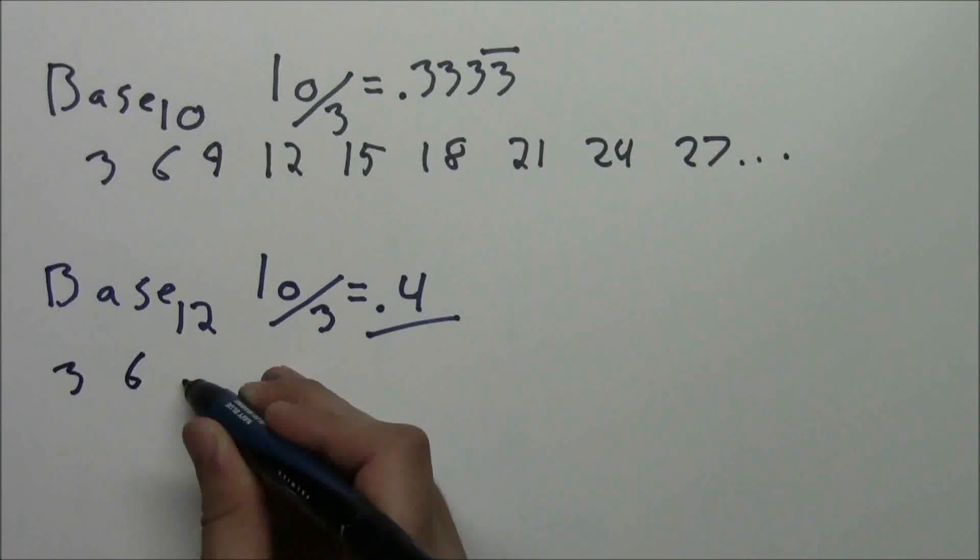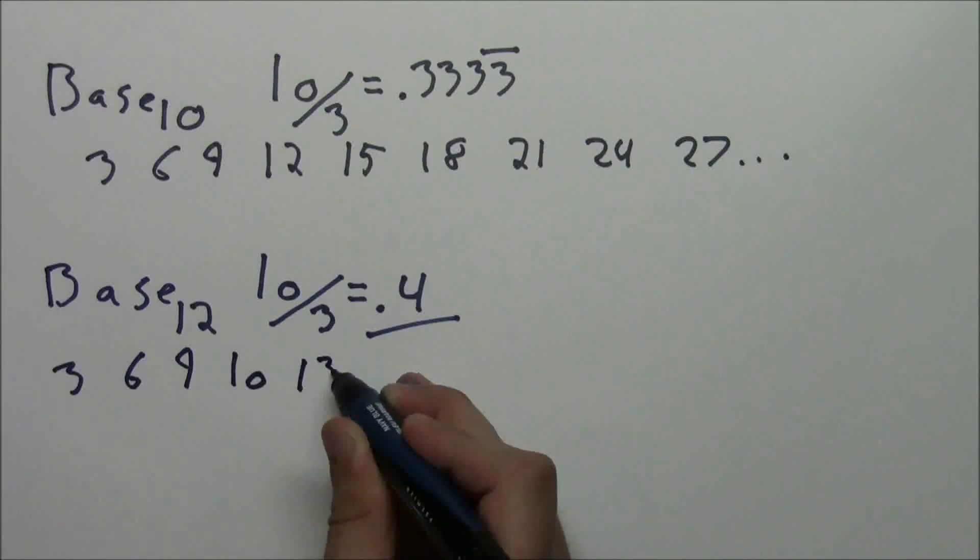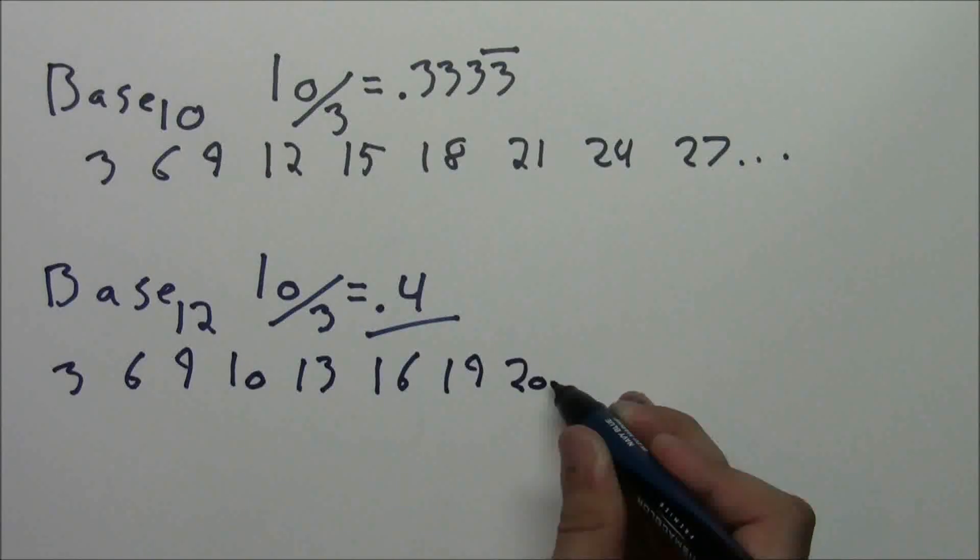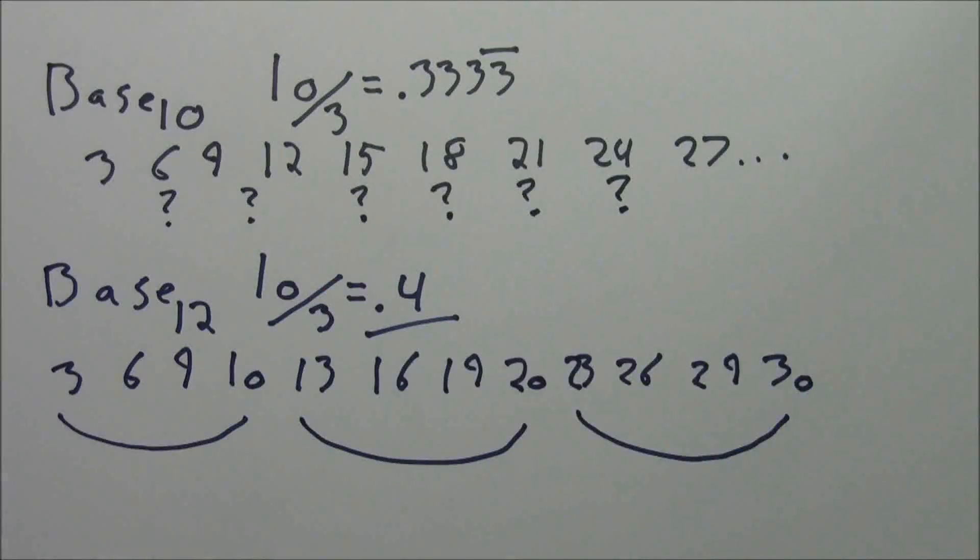But let's look at doznal. We have 3, 6, 9, 1 do, 1 do 3, 1 do 6, 1 do 9, 2 do, and then you just keep repeating that same pattern over and over.